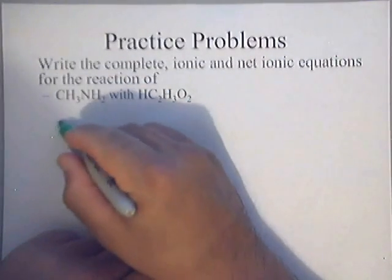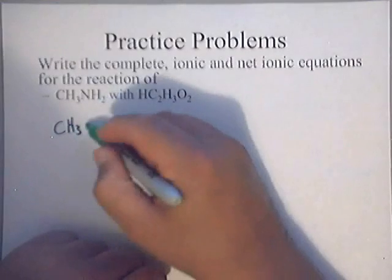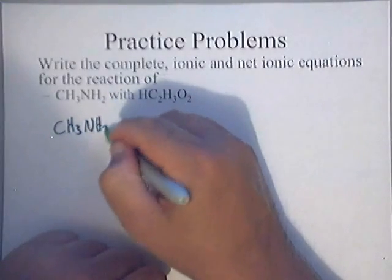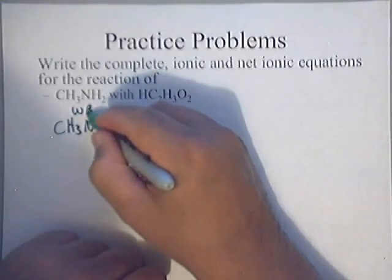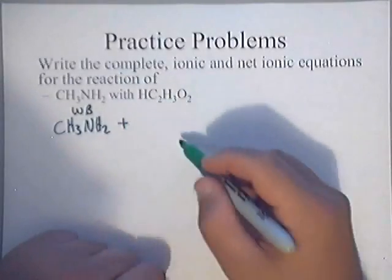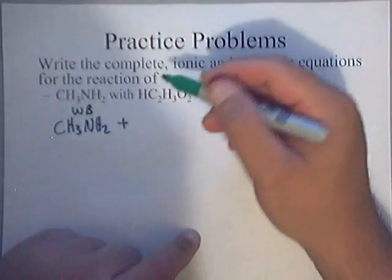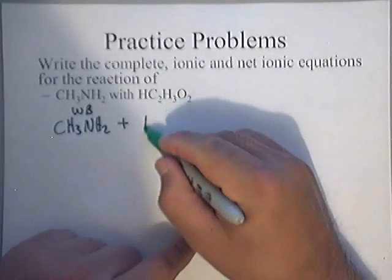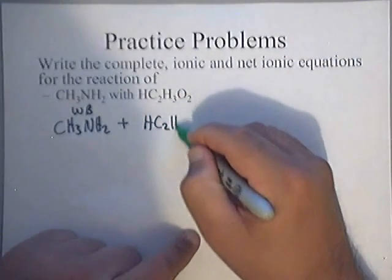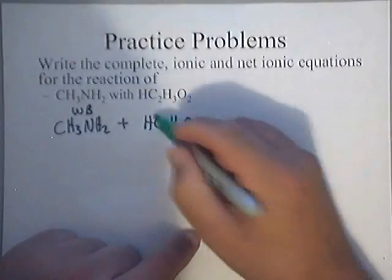Okay, so let's label everything. We've got this weak base, which is CH3NH2, and that's my weak base. And I've got this weak acid, vinegar, acetic acid. I've got HC2H3O2, weak acid.